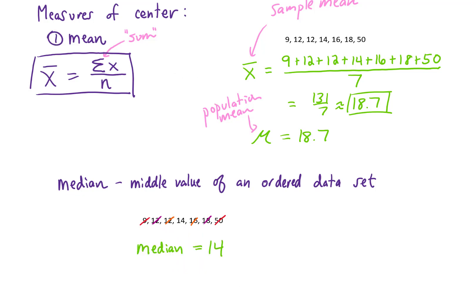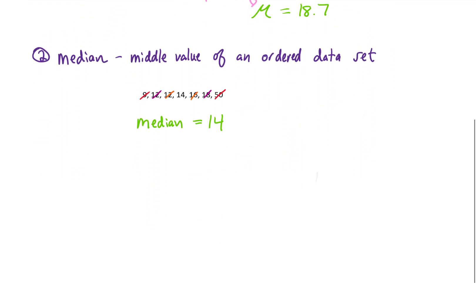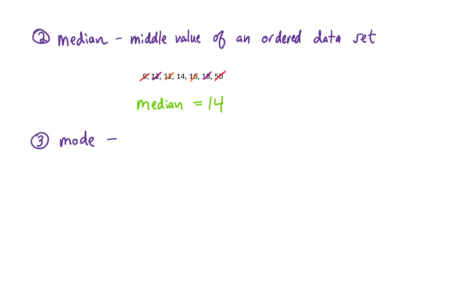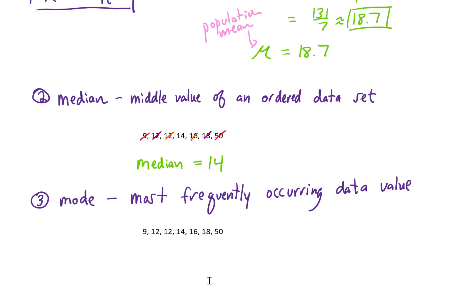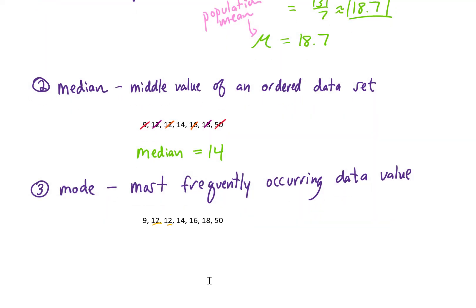So far we've talked about the mean and the median. Our third measure of center is called the mode — the most frequently occurring value in a data set. In this data set, the value 12 appears twice, and every other data value just appears once, so our mode for this set of data is 12.